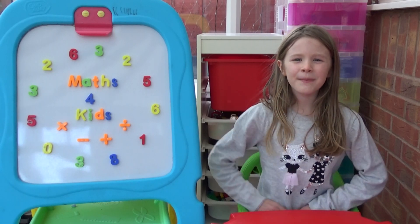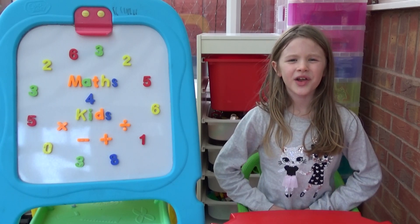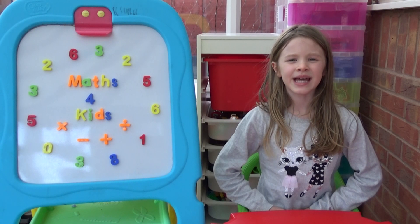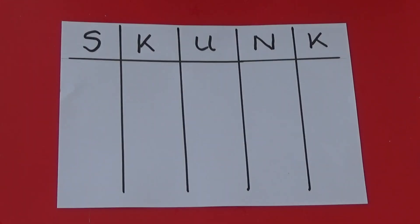Hi everyone, I'm Amber and today I'm going to show you how to play a maths dice game called Skunk. All you need to play this game are some dice, paper and a pen. The first thing each player needs to do is draw out the skunk board. Each letter of the word skunk represents a round in the game.